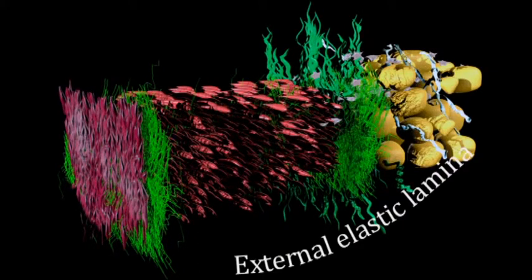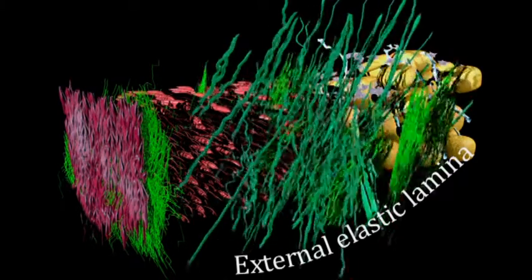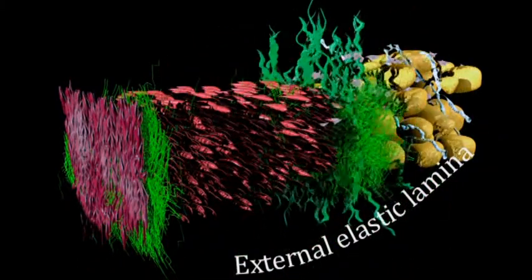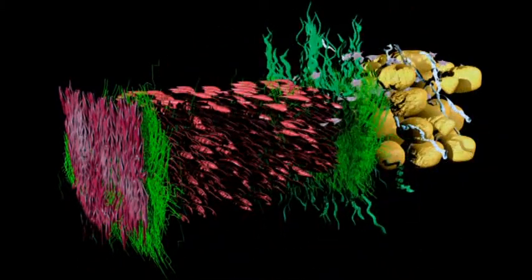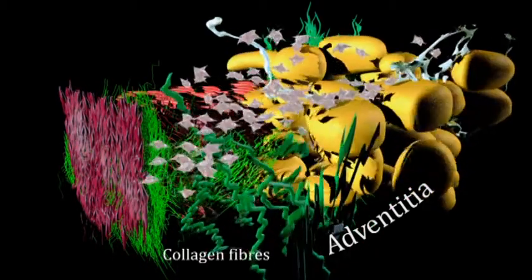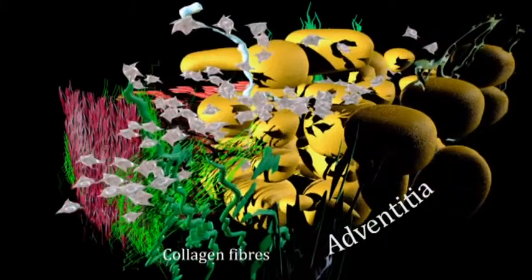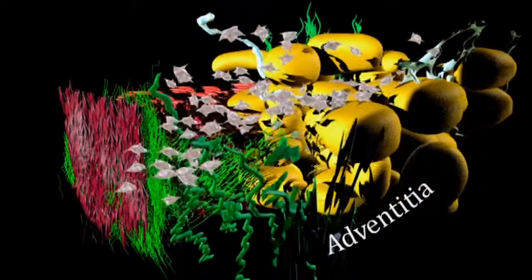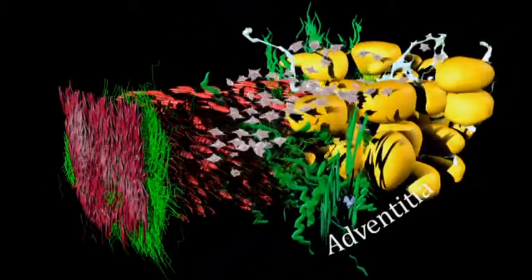External elastic lamina marks the border between the tunica media and adventitia, and it isn't as clearly defined as the internal elastic lamina. Adventitia contains connective tissue and collagen fibers which give the vessel stability, along with macrophages, adipocytes, some stem cells, and fibroblasts whose role is to maintain the structural integrity of the extracellular matrix.